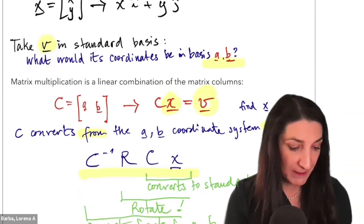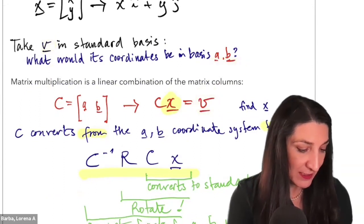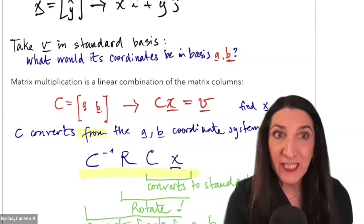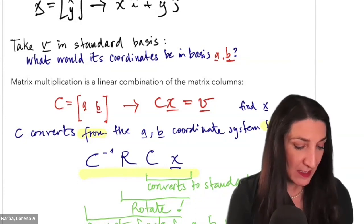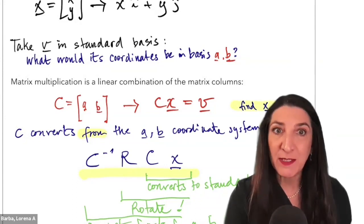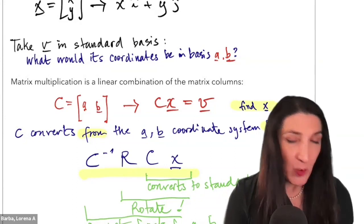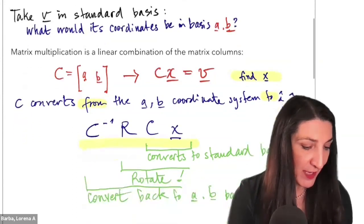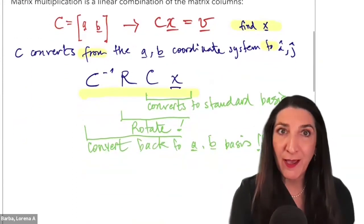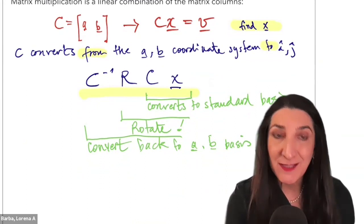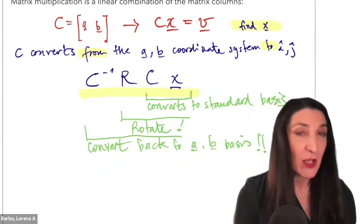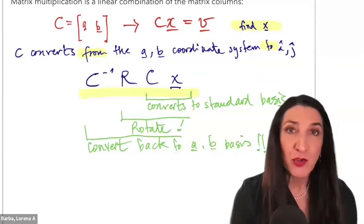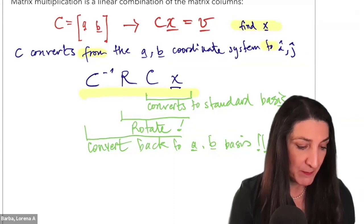That is the same as solving a linear system Cx = v, where x is the unknown vector. Once you solve that linear system and find x, what you have is that matrix C is the matrix that converts from the a,b basis to the standard basis.